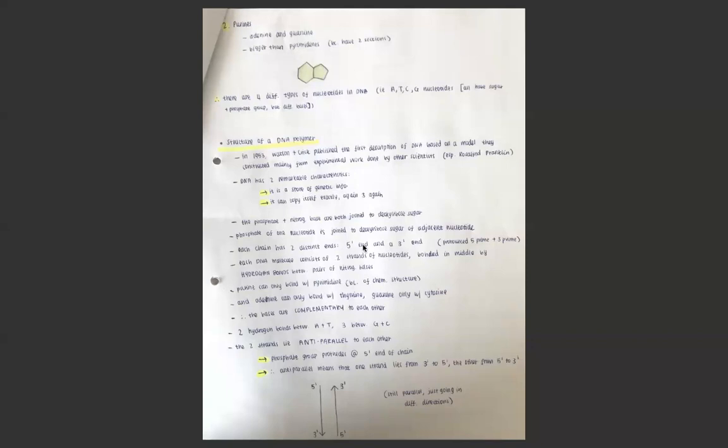Each DNA molecule has two strands of nucleotides, which are bonded in the middle by hydrogen bonds between each pair of nitrogen bases. They have specific complementary base pairs - it has to be purine with pyrimidine, adenine with thymine and guanine with cytosine. This is because of the way these bases are structured chemically. Between adenine and thymine, there are two hydrogen bonds between each base pair, and between guanine and cytosine, there are three bonds.